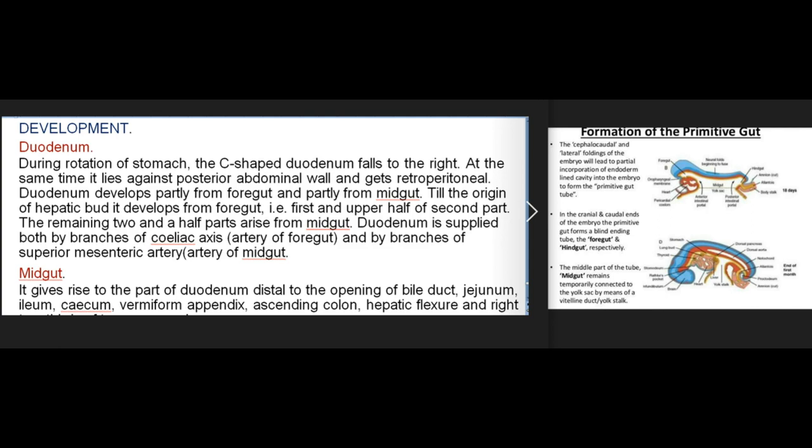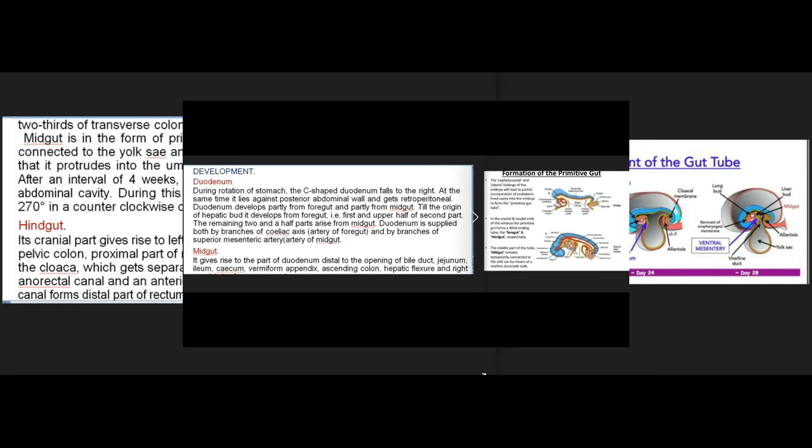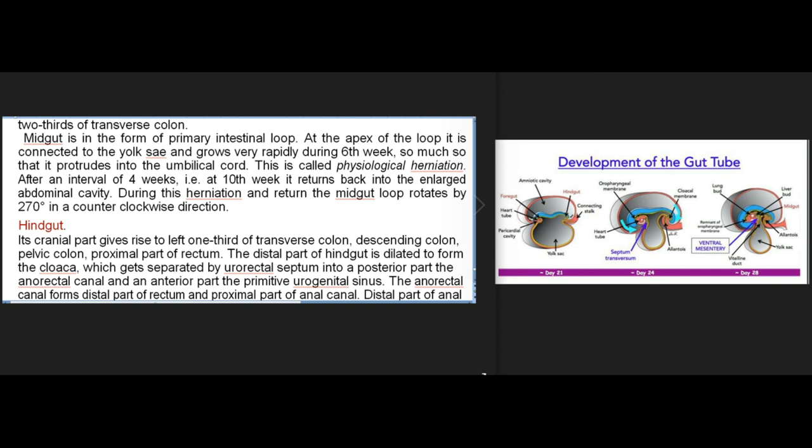The midgut gives rise to the part of the duodenum distal to the bile duct opening, the jejunum, ileum, cecum, vermiform appendix, ascending colon, hepatic flexure, and right two-thirds of the transverse colon. The midgut is in the form of a primary intestinal loop; at the apex of the loop it is connected to the yolk sac. During the sixth week it grows rapidly and protrudes into the umbilical cord — physiological herniation. After a four-week interval, at the tenth week, it returns back into the enlarged abdominal cavity. During this herniation and return, the midgut loop rotates by 270 degrees in a counterclockwise direction.